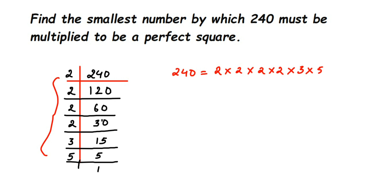To find a perfect square using prime factorization, we pair up the factors. Pairing means making a set of two identical numbers. Here, the two 2s form one pair and the next two 2s form another pair. But you can see that 3 and 5 have no pair — these factors are single. We need one more 3 and one more 5 to pair them up.